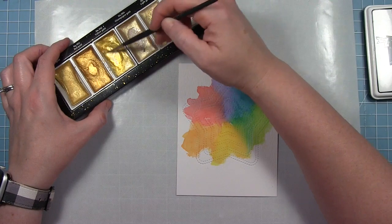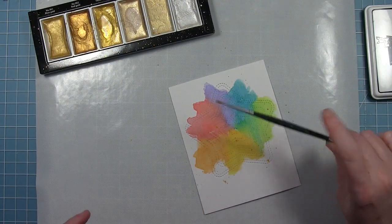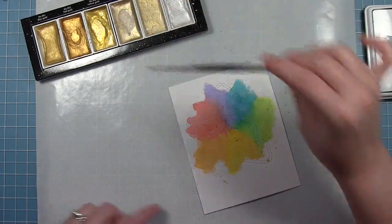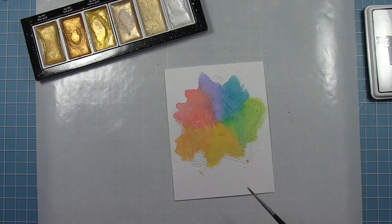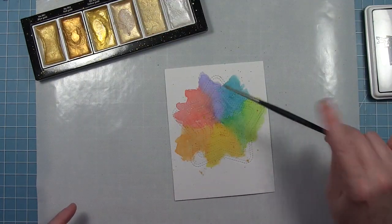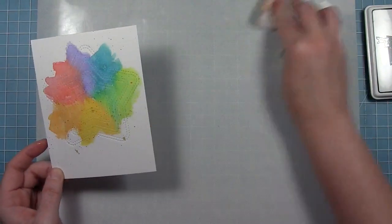So I just hit that with my heat tool to dry everything and then I wanted to add some gold metallic splatters to this to give it some shimmer and some interest. And so I'm trying to keep those splatters mostly on top of my watercolor. I don't want to splatter the entire background. I just want to keep it on this focal point that I've created in the middle of my card.